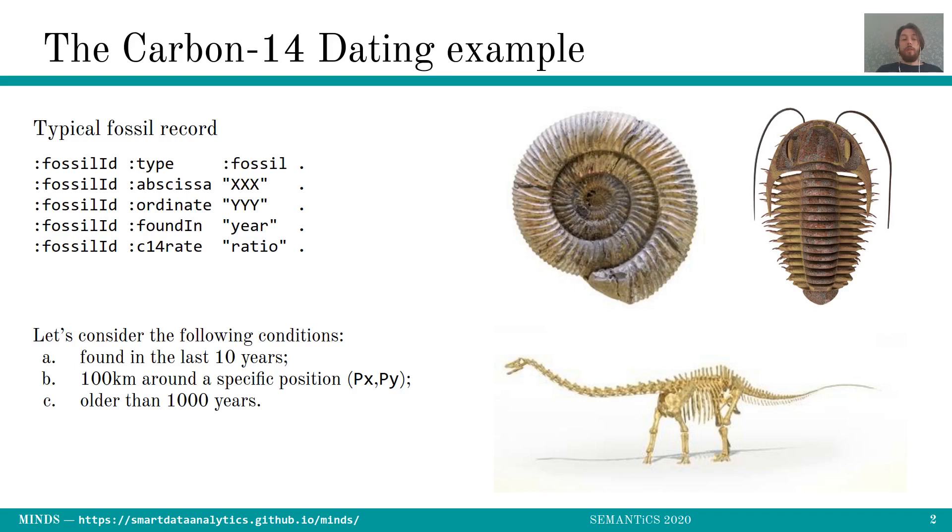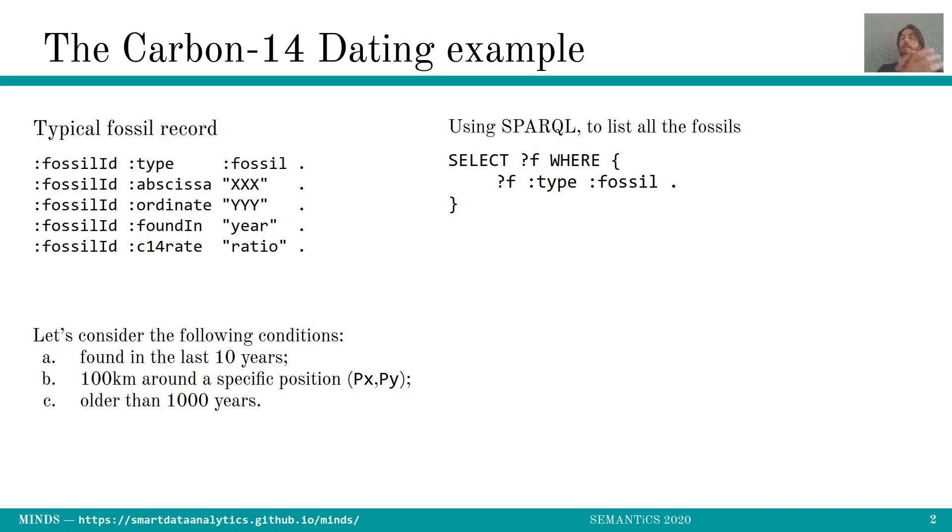So the typical fossil record would look like so and now let's consider the following conditions. Let's say that we want to extract all the fossils from the database which are found within the last 10 years, 100 kilometers around a specific position and older than 1000 years. To do so, first to extract all the fossils using SPARQL, we could do select F where F is of type fossil.